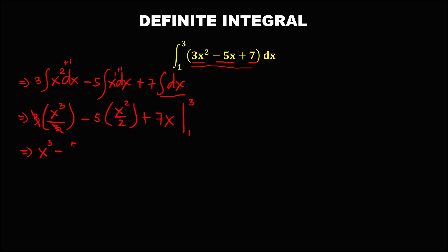Simplifying further — the 3 cancels — we have x³ minus (5/2)x² plus 7x, evaluated from 1 to 3. Now we substitute the upper limit into this equation, so x becomes positive 3.